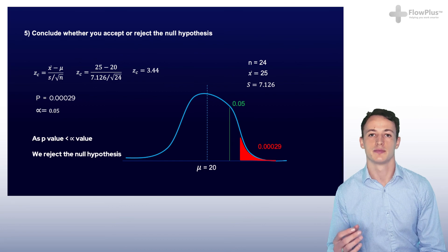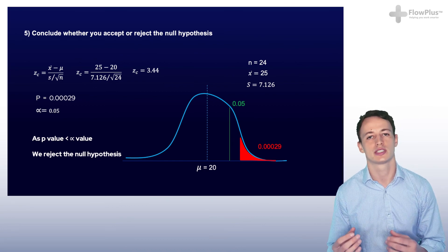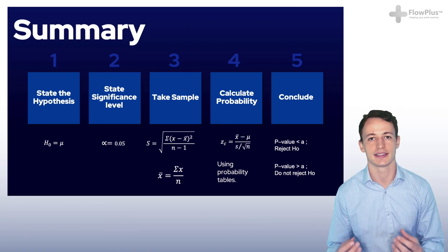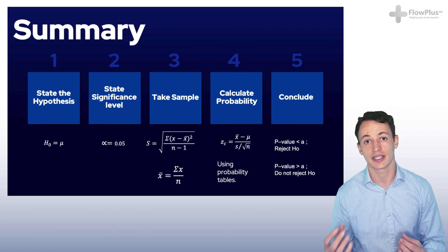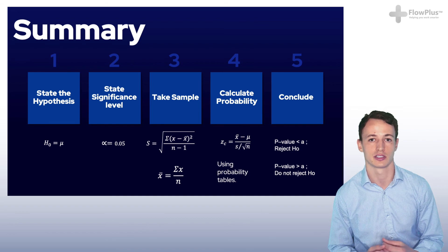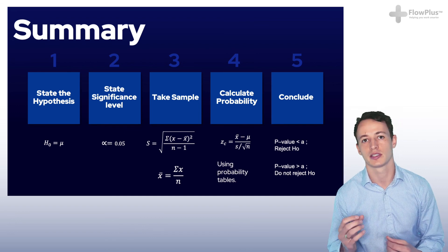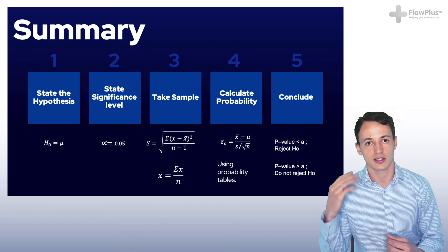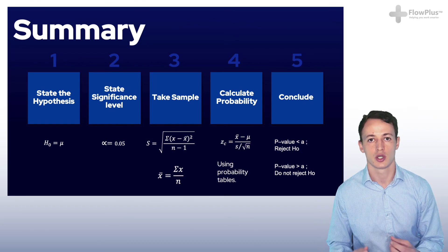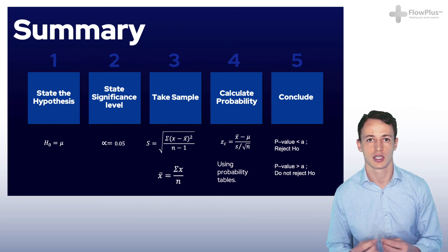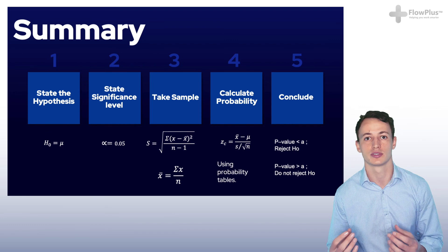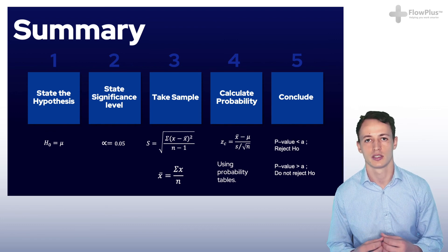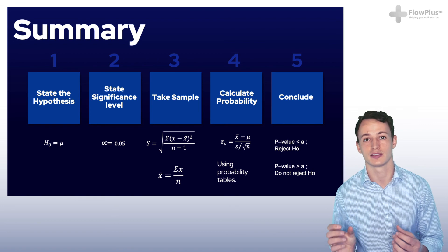And that is the end of this module. It may seem daunting using alpha, z, and p-values, but like anything else, the more you use it the more comfortable you will become with this methodology. The main purpose of this module is to get that scientific thinking going, where you question results and you understand the statistical significance of them. As with every conclusion we make, there is a level of uncertainty, and it's important to make sure that is brought to light.